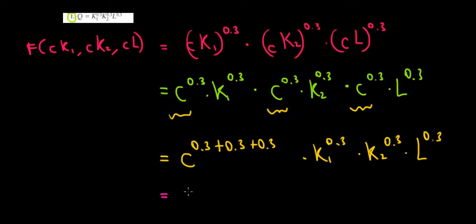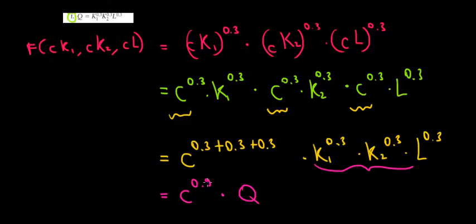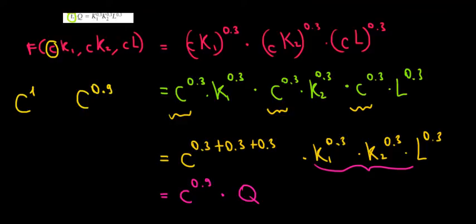So what is C to all that power? Well, 0.3 plus 0.3 plus 0.3 is just 0.9. And K1 times K2 times L, all to the power of 0.3, is the initial production function. The production increased by a proportion to the power of 0.9, whereas the input increased by a proportion of C to the power of 1. The output changed by C to the power of 0.9, which is less than the increase in input, meaning this is an example of decreasing returns to scale. And we are done.